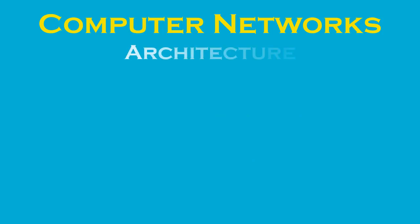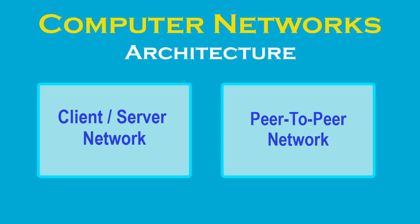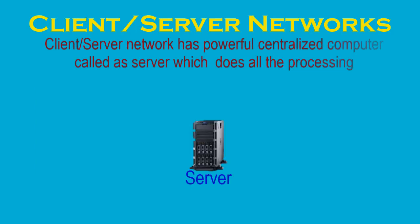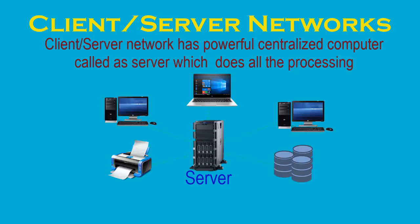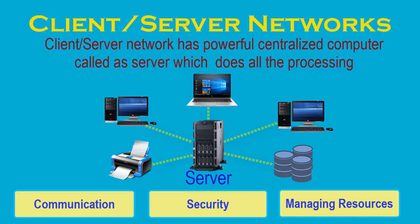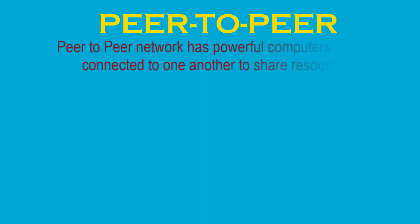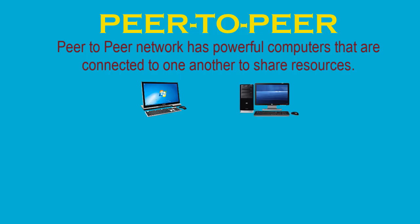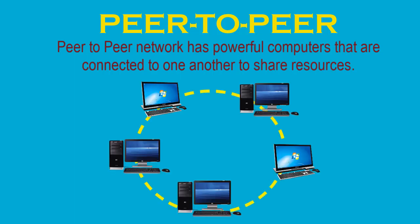Now let's look at the different types of network architecture. The two types are client-server network and peer-to-peer network. A client-server network has a powerful centralized computer called a server which attends to all the requests of clients and does all the processing. The server performs all major operations such as communication and security management, and is responsible for managing all resources such as files, directories and printers. A peer-to-peer network has powerful computers connected to one another to share resources, where each computer stands as an individual unit.